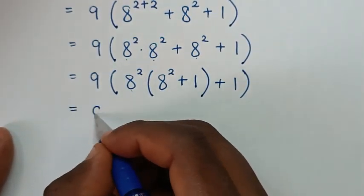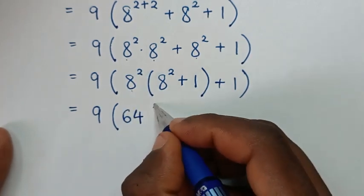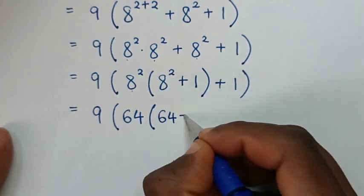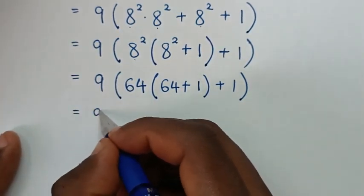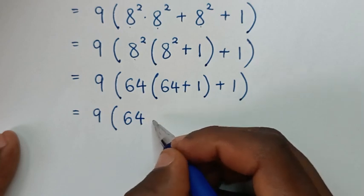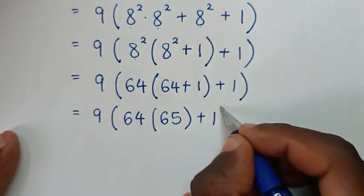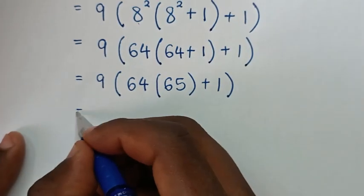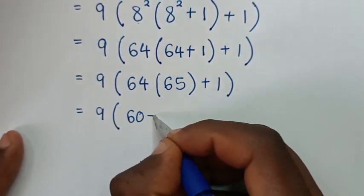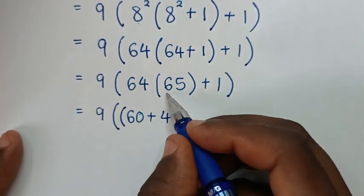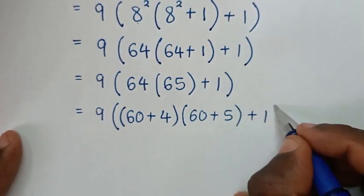Then it will be equal to 9 bracket: 64, then here, bracket 64 times 64 plus 1 is 65, bracket, plus 1, bracket. Then it will be equal to 9 bracket: 64 is same as 60 plus 4, bracket, times 65 which is same as 60 plus 5, bracket, then plus 1, bracket. Now we'll expand: 60 times 60 is 3600, plus 60 times 5 is 300, plus 4 times 60 is 240, plus 4 times 5 is 20, bracket, then plus 1, bracket.